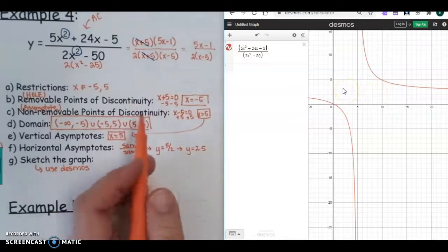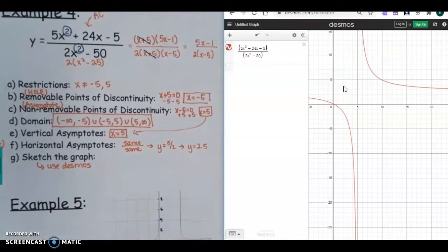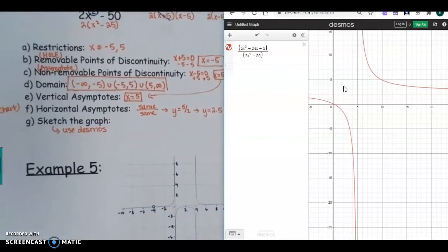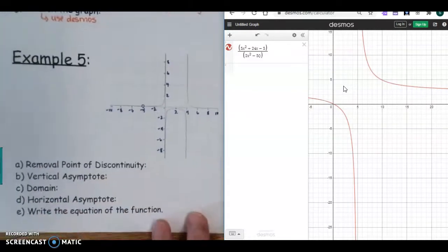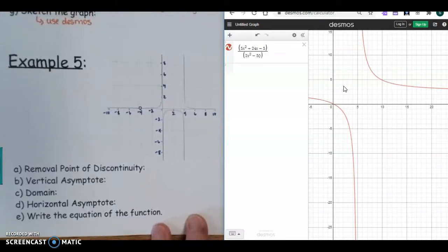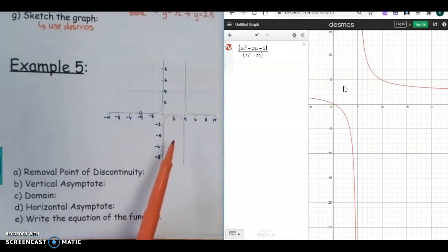So that's how it all is related using Desmos and graphing. Since you have that capability, you're not going to have to sketch it by hand. So now let's kind of do the opposite. We're going to look at the graph and we're going to pull all of this information from the graph and then eventually be able to write our function on Example 5.